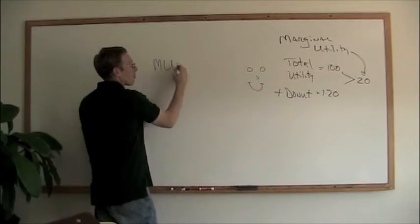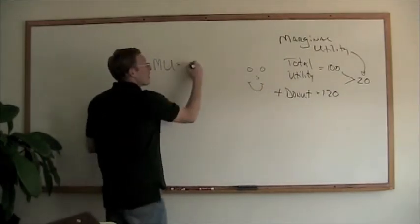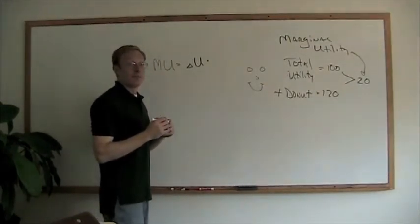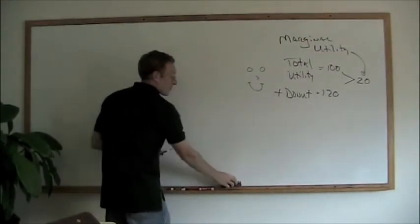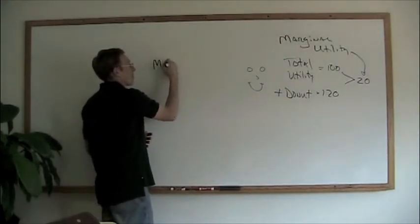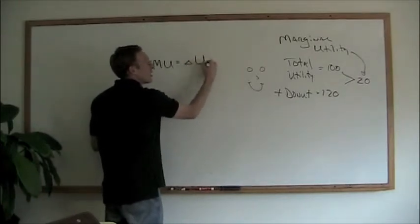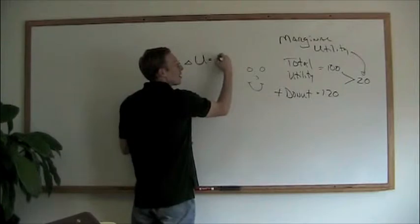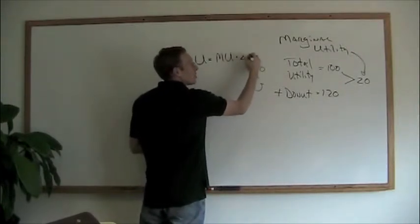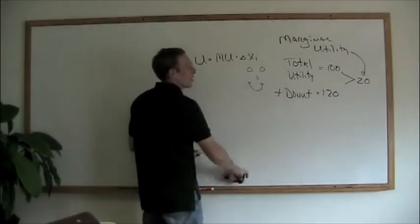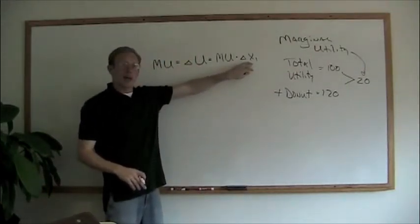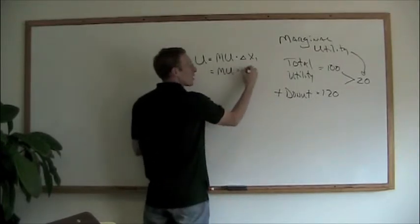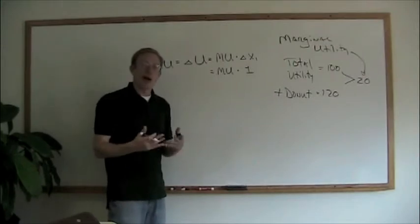Another way of looking at marginal utility is from a mathematical perspective. Marginal utility, abbreviated MU, equals the change in total utility. We can also express it as: the change in total utility equals marginal utility times the change in quantity consumed. If we're looking at a one-unit change, then the change in utility simply equals marginal utility times one.